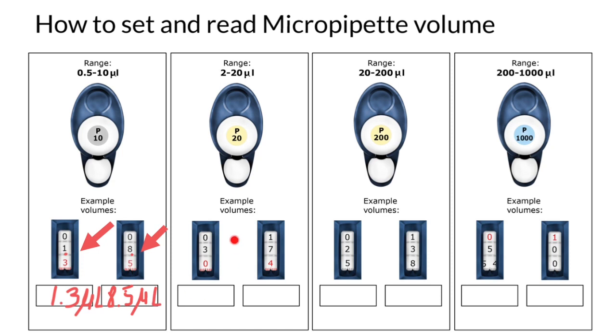Now let's check this reading. This is not 30 microliters, because the maximum volume that this micropipette can handle is 20 microliters. So again, imagine that we have a decimal point here, and this actually means 3.0 microliters.